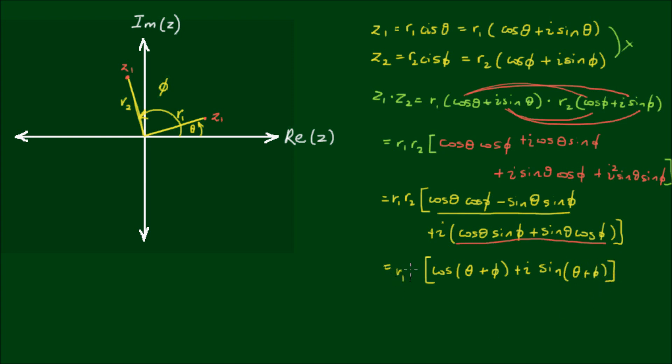And of course, r1 and r2 remain at the front. And finally, I can say that the product of z1 by z2 is equal to r1 r2 cis of θ plus φ.